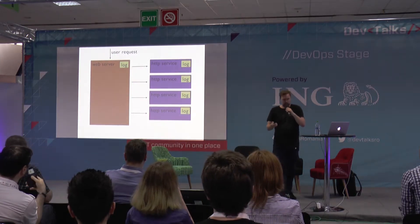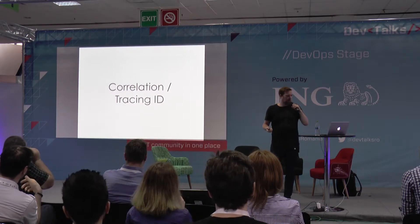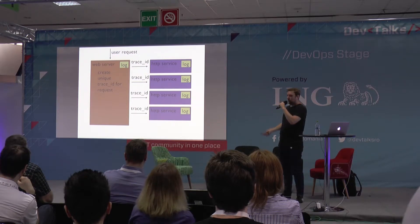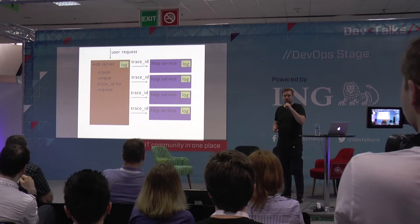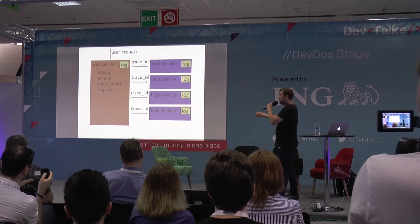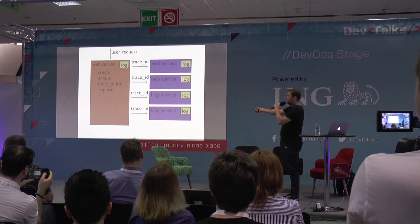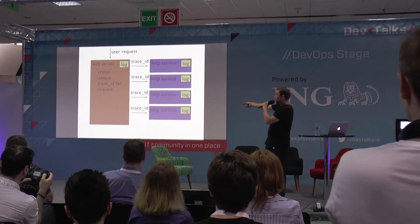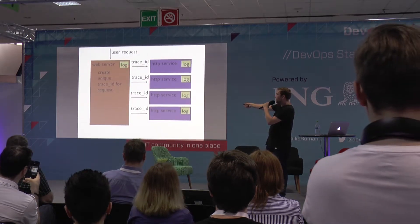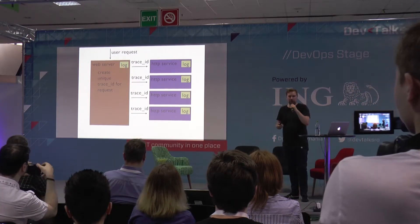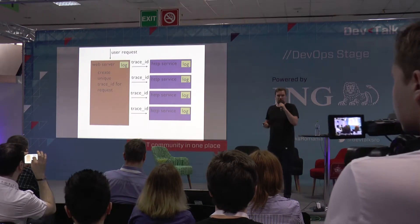One way to do this is to use so-called correlation or tracing IDs. It's very simple: as soon as a request comes into your data center, you create at the first point of entry a random unique ID. You add this ID to all logs, and also transport it — for example as an HTTP request header — to all other services that also put it into their logs. So if I see an error in my log and want to see what else happened in that request, I can just parse my logs for this tracing ID and find all corresponding log entries and aggregate them. It's very simple but also very powerful.